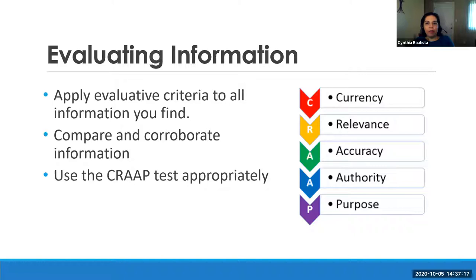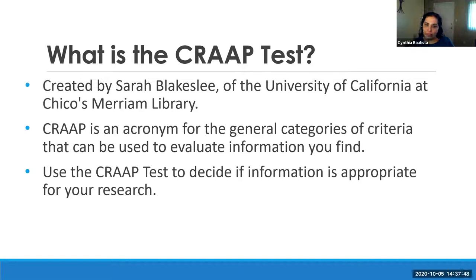Now we're going to talk about how to evaluate the information you find online. When looking for information for personal, professional, or academic use, you need to evaluate the quality of the information to determine if it's trustworthy and reliable. For this, you can use the CRAP test — an acronym that stands for Currency, Relevance, Authority, Accuracy, and Purpose. It was created by a librarian from UC Chico's library and it's going to help you decide if the information you found is appropriate for your research.